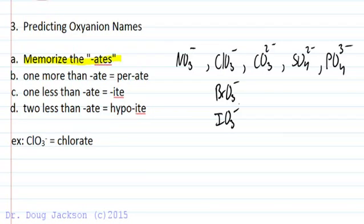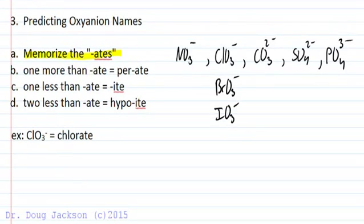If you're given another -ate to memorize, learn it, because then you know the others. If we have one more, take chlorine, for example, or chlorate, for example, one more oxygen than chlorate, we are now at perchlorate.